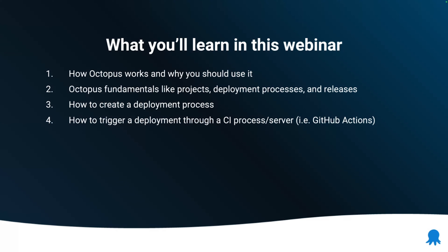It's also important to understand the fundamentals associated with Octopus itself — things like projects, deployment processes, releases, etc. These terms you'll come to know in this webinar, and they describe how things work within Octopus. Then we'll get going with some demos, talking about how to create a deployment process and how that can integrate with an existing CI process. An example of that is GitHub Actions, but there are many products available to you.